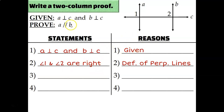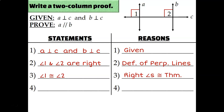Now, to prove that A and B are parallel, I need congruent corresponding, alternate interior, or alternate exterior angles, or supplementary consecutive interior angles. Angles 1 and 2 are corresponding — both in the top left-hand corner. If I can show they're congruent, I can show A and B are parallel. The right angles congruence theorem states that all right angles are congruent, so angle 1 is congruent to angle 2. That means line A is parallel to line B because of the corresponding angles converse.